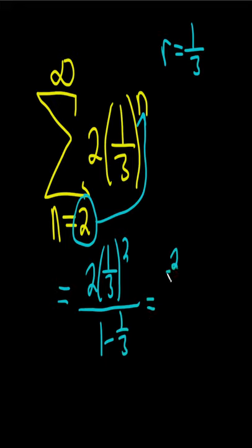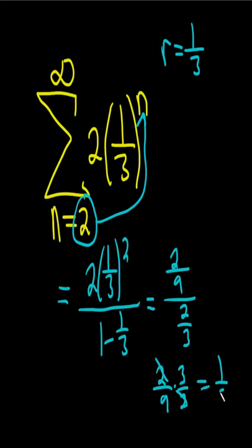So this is 2 over 9, because 3 squared is 9. 3 thirds minus 1 thirds is 2 thirds. So this is 2 ninths divided by 2 thirds, it's really times 3 halves. These cancel, and so you just get 1 third. So this infinite series is equal to 1 third.